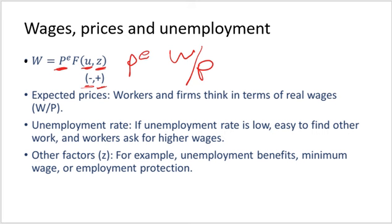In the next three chapters we will look at how workers and firms form expectations of the price level. The second variable is unemployment. The negative sign of unemployment in the wage equation shows that an increase in the unemployment rate decreases wages, because higher unemployment forces workers to accept lower wages — emphasizing the negative relationship between unemployment rate and wages.